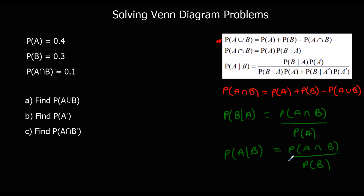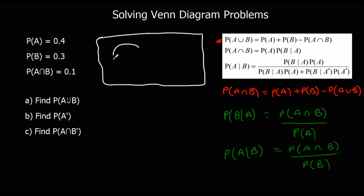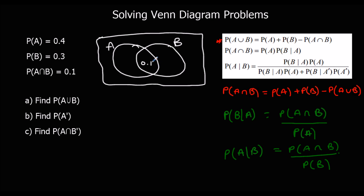So these are the formulas we're going to be using to answer these questions. We've got some information that's enough to draw our Venn diagram. We've got circles A and B; A∩B goes in the middle. The probability of A is 0.4, we've already got 0.1, so the rest of the A circle must be 0.3.